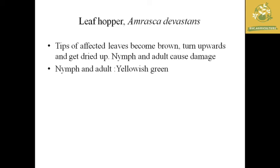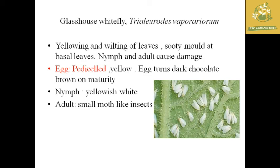The next pest is the glasshouse whitefly, which gets its name from its glass-like wing appearance. The scientific name is Trialeurodes vaporariorum. Symptoms include yellowing and wilting of leaves, sooty mold, and loss of leaves. Both nymphs and adults cause damage in the potato plant, reducing the leaves on the plant. Eggs are pedicellate and yellow in color; nymphs are yellowish white; adults are small insects with a glass-like white resemblance — hence the name glasshouse whitefly.